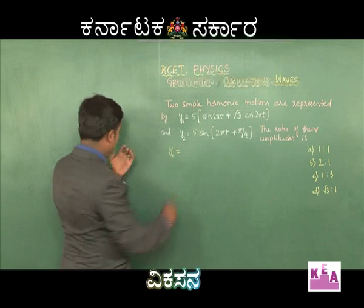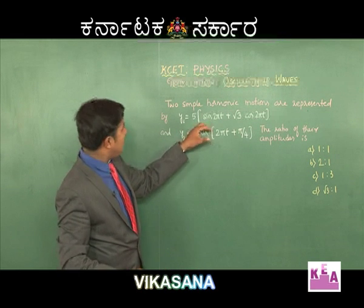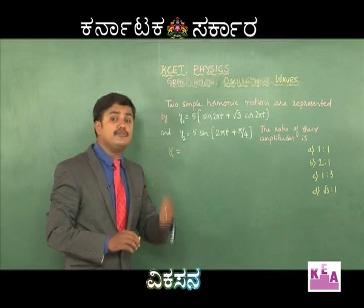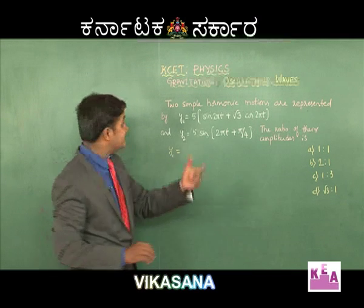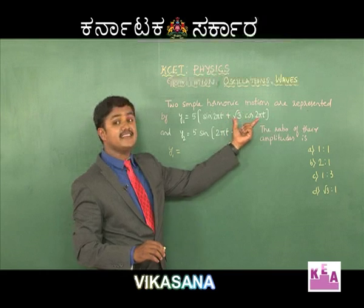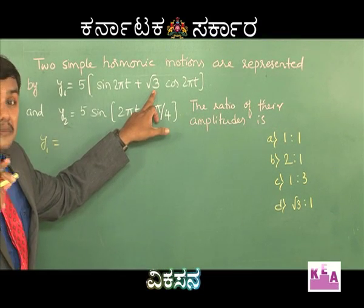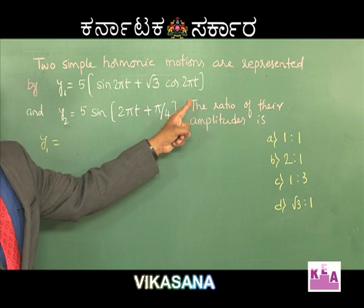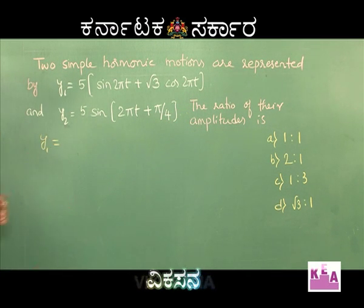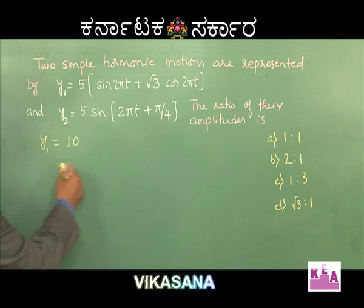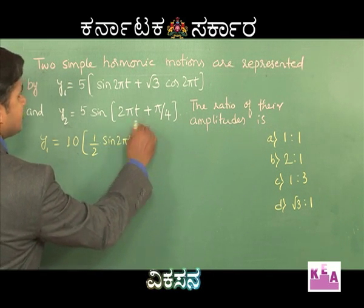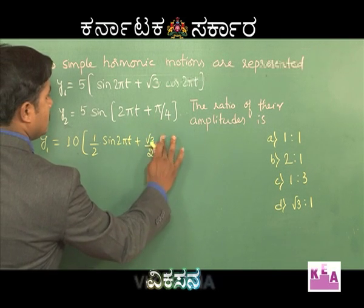How do I write y1? I have 5(2 sin 2pi t + root 3 cos 2pi t). This can be converted into the form sin(A + B) = sin A cos B + cos A sin B. Since root 3 always attracts a factor of root 3 by 2, I multiply and divide the whole expression by 2. That gives me 10 outside the bracket, and inside: half sin 2pi t + root 3 by 2 cos 2pi t.